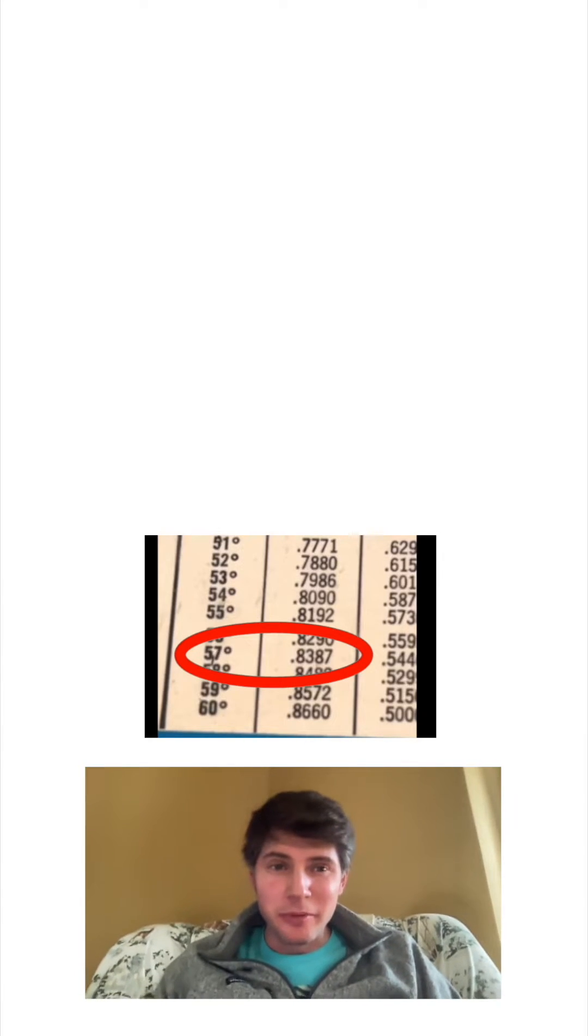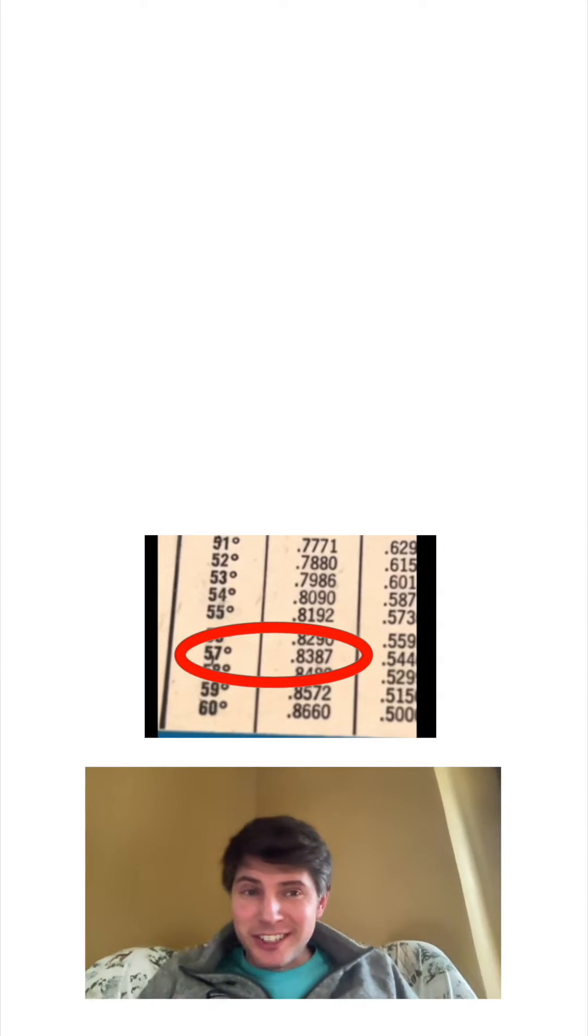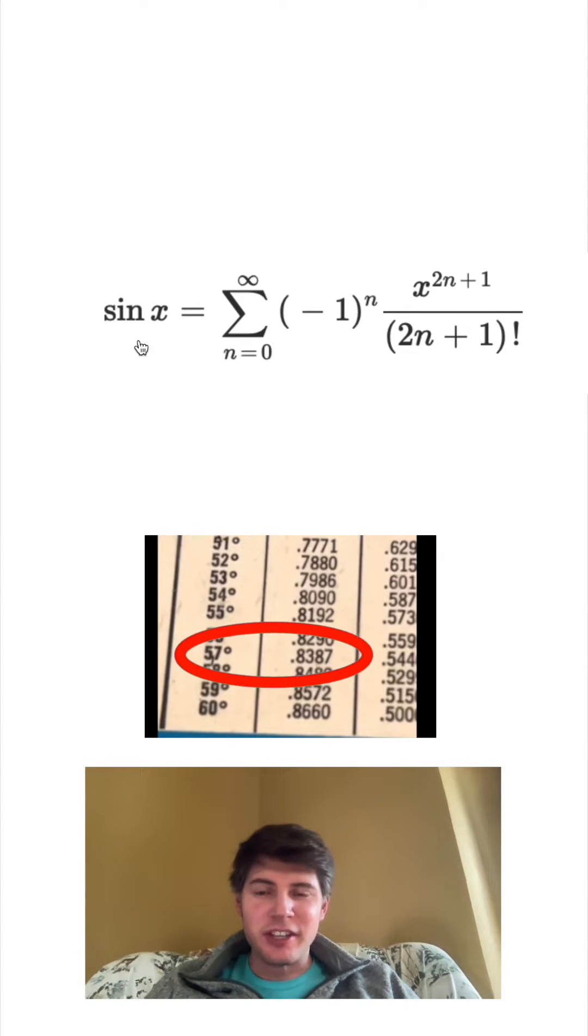Okay, so how did they calculate sine 57 before calculators? They had to do a thing called a Taylor series. So this right here is the Taylor series for sine of x.